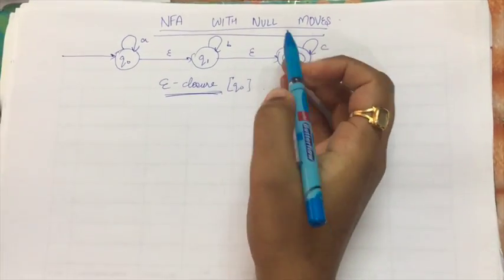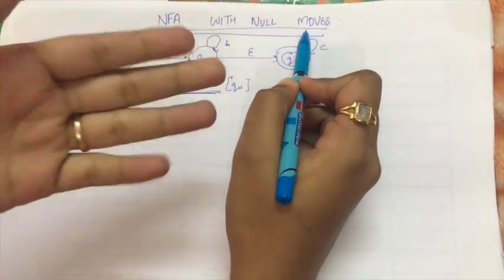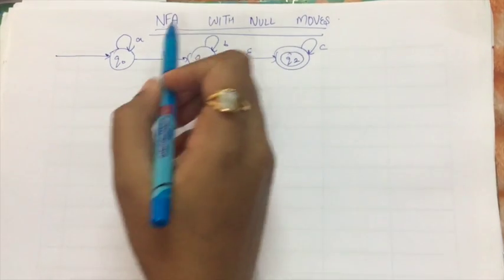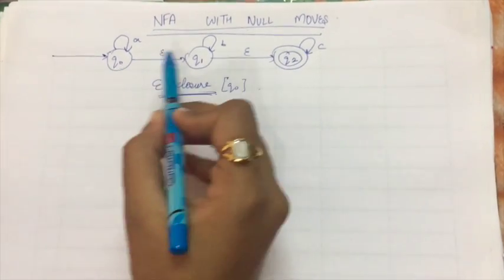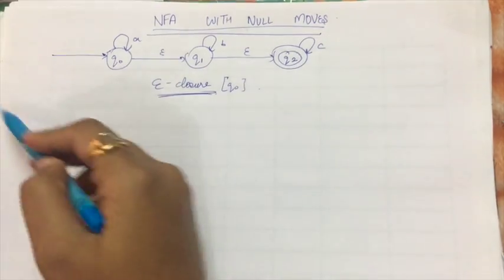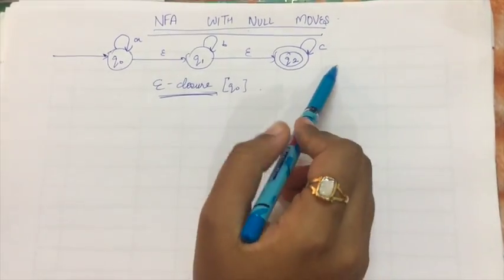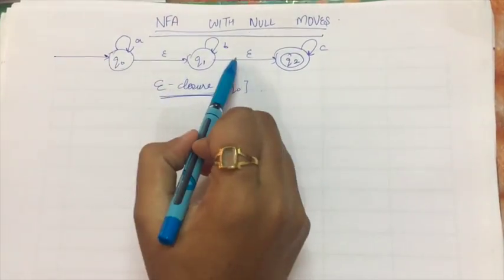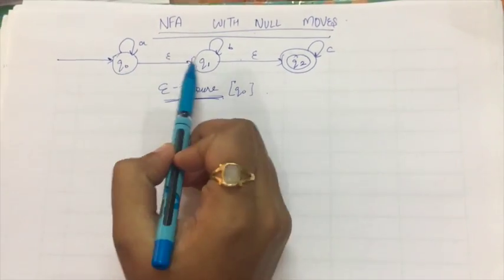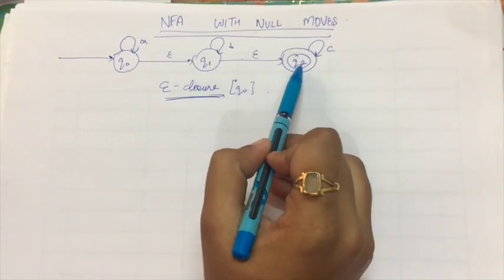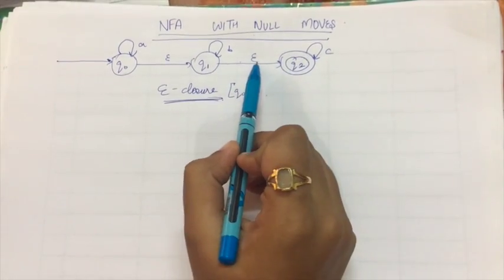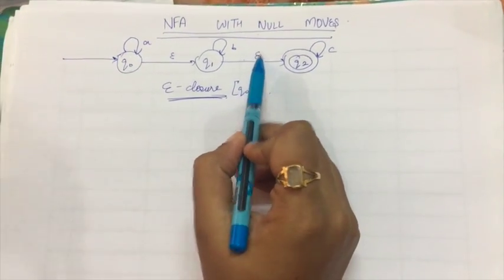First, we should know what a null move is. A null move means we can go from one state to another state without an input symbol. In this transition diagram, we have two input symbols A and B, but we go from state Q0 to Q1 and from Q1 to Q2 without using any input symbol — that is using null. So that is a null move.